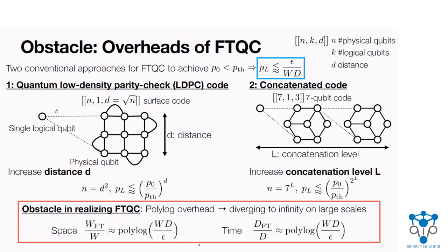On the other hand, back in the 90s, all these fault-tolerant protocols were initially proposed in another way, based on concatenated code. In this approach, we encode logical qubits into multiple physical qubits using a fixed code, such as the seven-qubit code. This encoding reduces error by a certain amount. And to reduce error more, we recursively encode each physical qubit into another logical qubit. This recursive procedure is called code concatenation. We can suppress the error by increasing the level of concatenation. In both two approaches, the space and time overhead is shown to scale polylogarithmically, and it diverges to infinity on large scales.